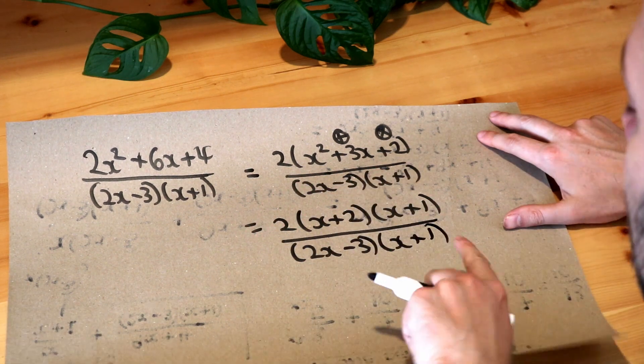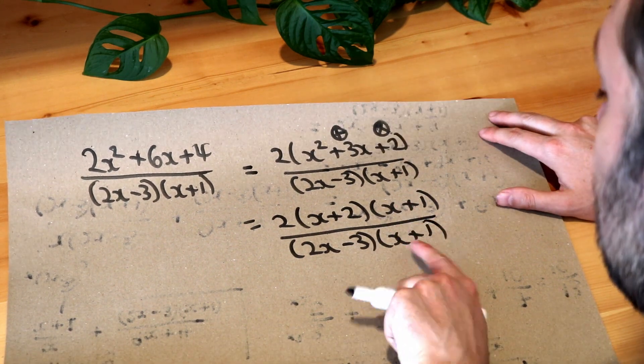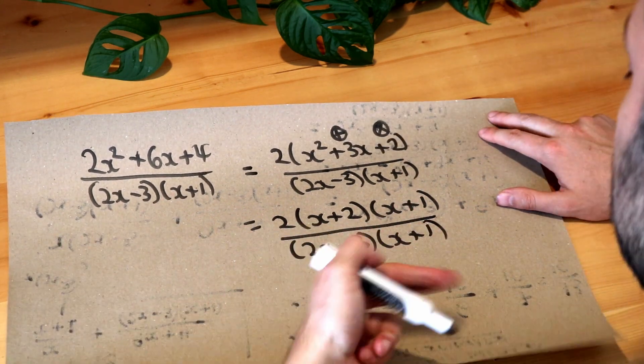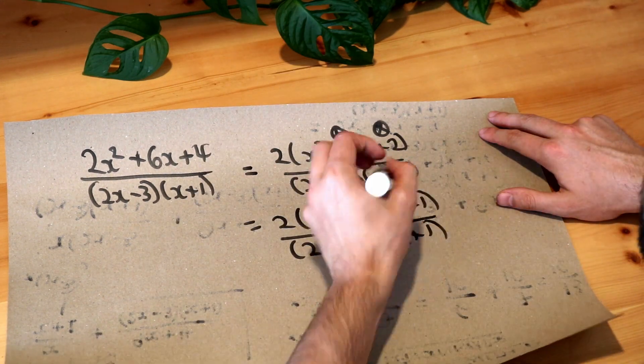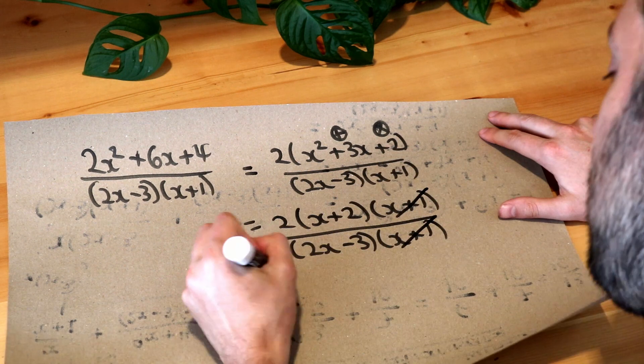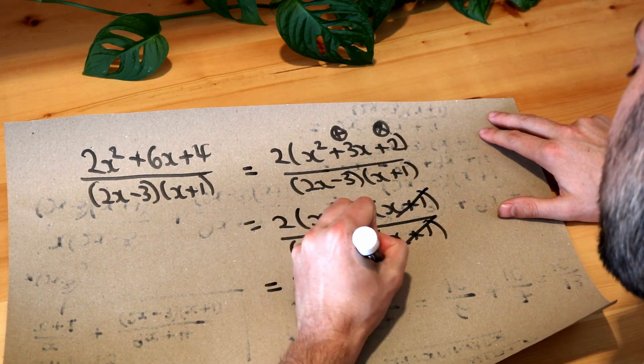Oh and that's brilliant because can you see we have an x plus 1 in the numerator and the denominator and remember we can simplify fractions by just dividing top and bottom by the same thing so we can just divide top and bottom by x plus 1 and we're left with 2 brackets x plus 2 over 2x minus 3.